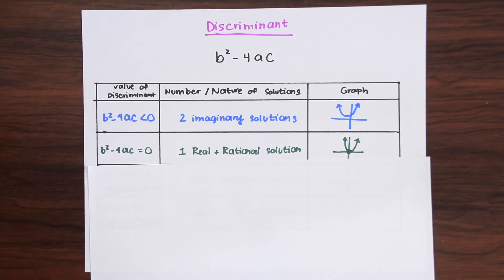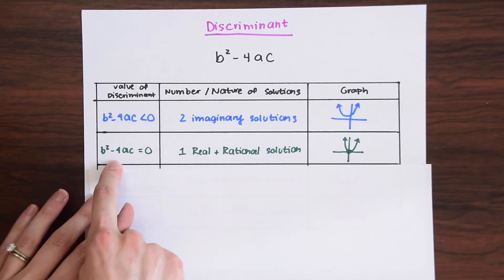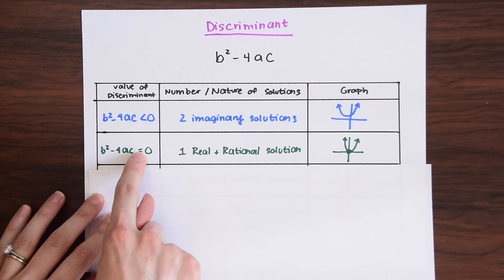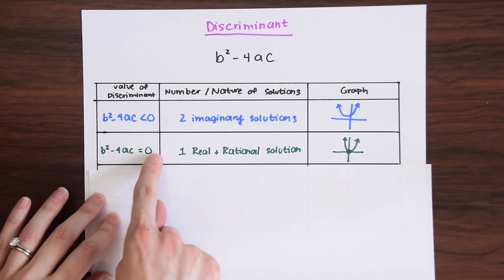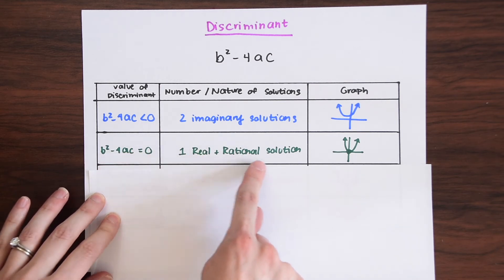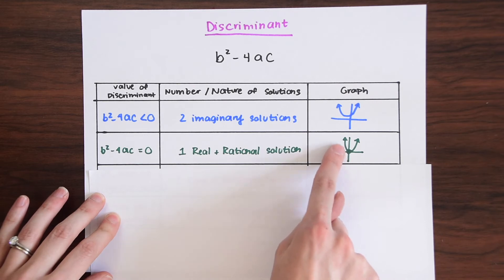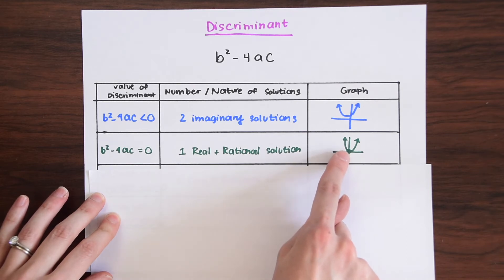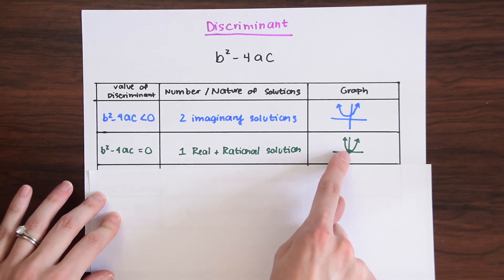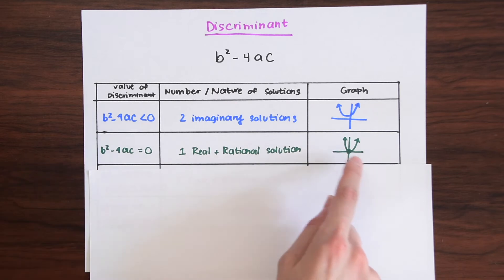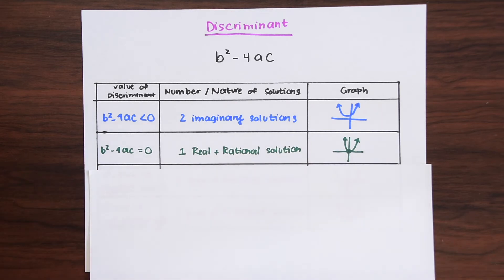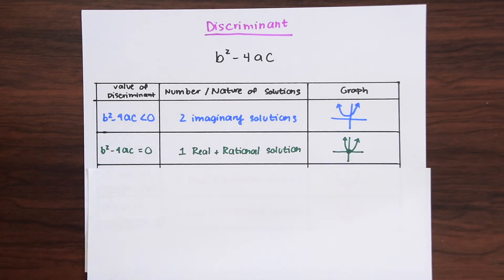Another scenario is if the discriminant is equal to zero. That means there is one real and rational solution, which translates on the graph as just one point where the graph hits the x-axis — one solution that is real and rational.